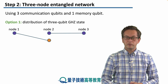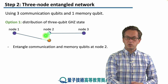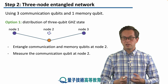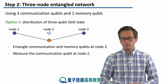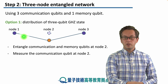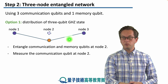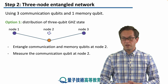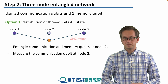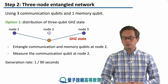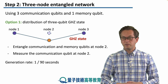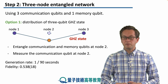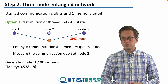Node two performs an entangling operation between its communication qubit and its memory qubit. After that, node two measures out the communication qubit. If the measurement is successful, the communication qubit at node one, the memory qubit at node two, and the communication qubit at node three are all part of a GHZ state — a three-qubit multipartite entangled state. The generation rate was approximately one GHZ state every 90 seconds, and the fidelity of this state was 0.538 ± 0.018.